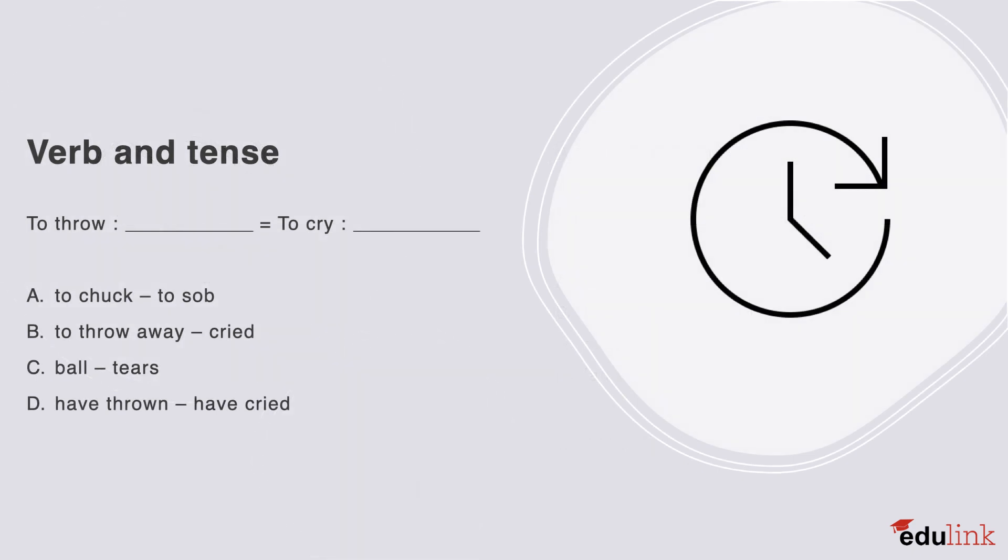The next relation type is verb and tense. You have time now to choose the correct answer. The correct answer is D. To throw and to cry are both in their infinitive forms, and have thrown and have cried are conjugated forms. In this case, they are in the past perfect forms.